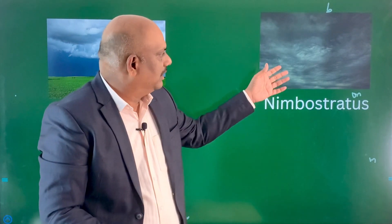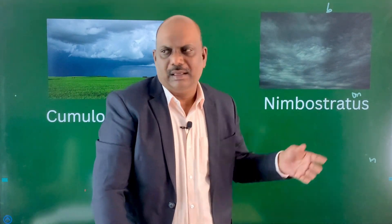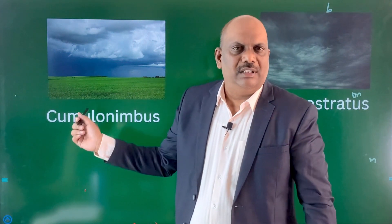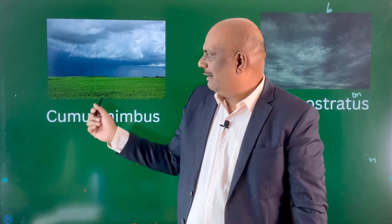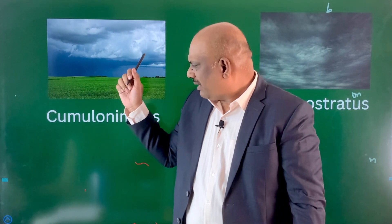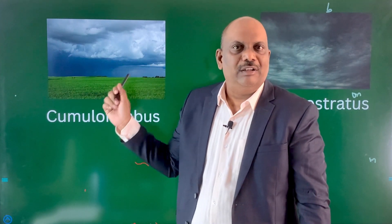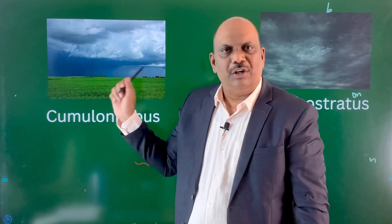To recap the cloud types: nimbostratus clouds are associated with a warm front, bringing gentle rainfall that lasts for a long duration. On the other hand, cumulonimbus clouds are associated with a cold front, and this type of precipitation is accompanied by lightning and thunder, with rainfall of short duration.